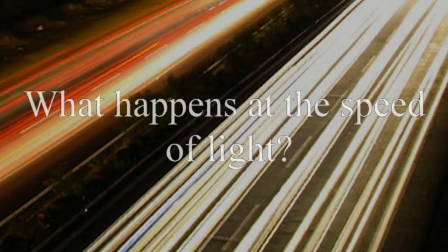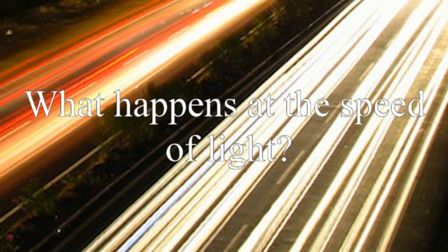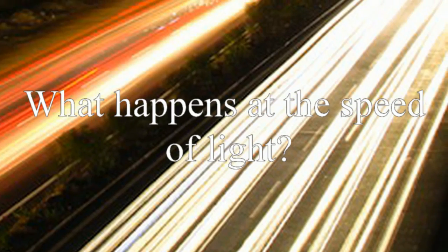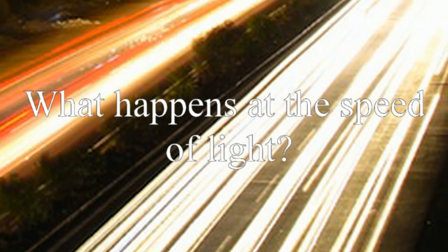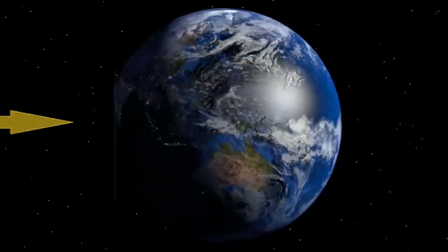What happens at the speed of light? Light is the fastest thing in the universe. It is, more or less, time. Light travels at about 3 times 10 to the 8th meters per second. That's fast enough to go around the earth 7.5 times per second.